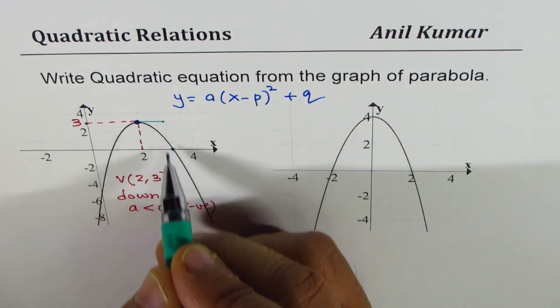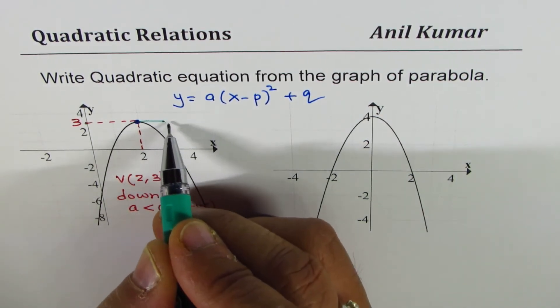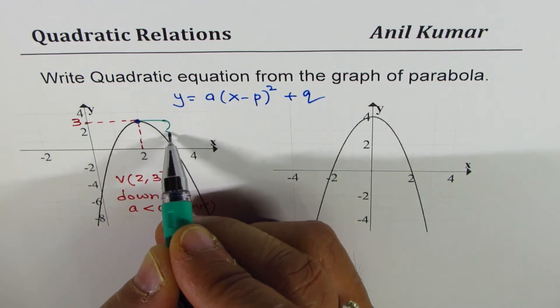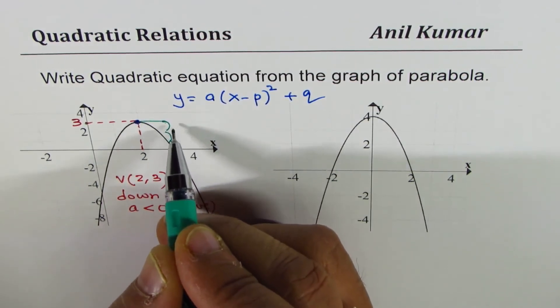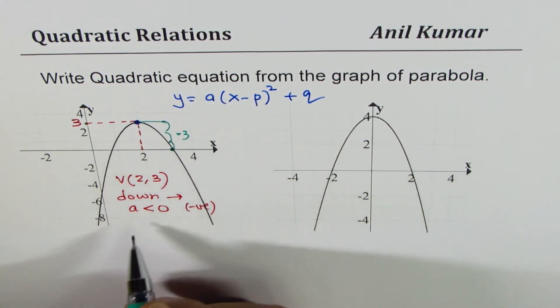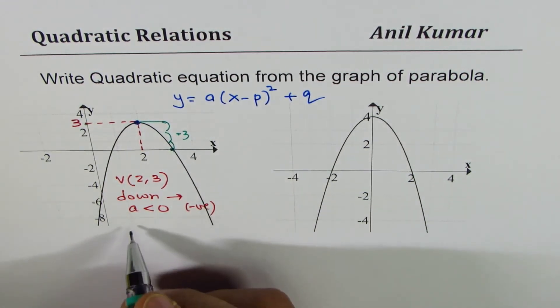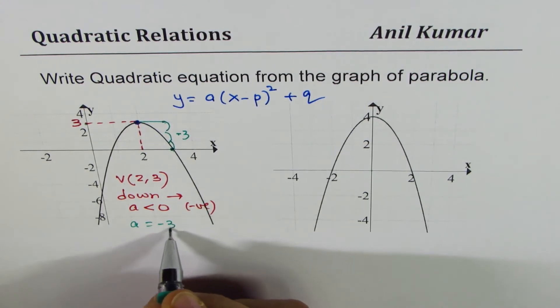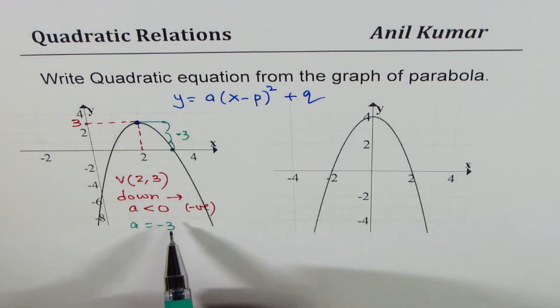Do you see, it is 3 and we go down to 0? So from 3 we are going 1, 2, and 3 units down. So we go minus 3 steps. Since we have moved 3 steps down, the value of A is minus 3. So now we know all the values.